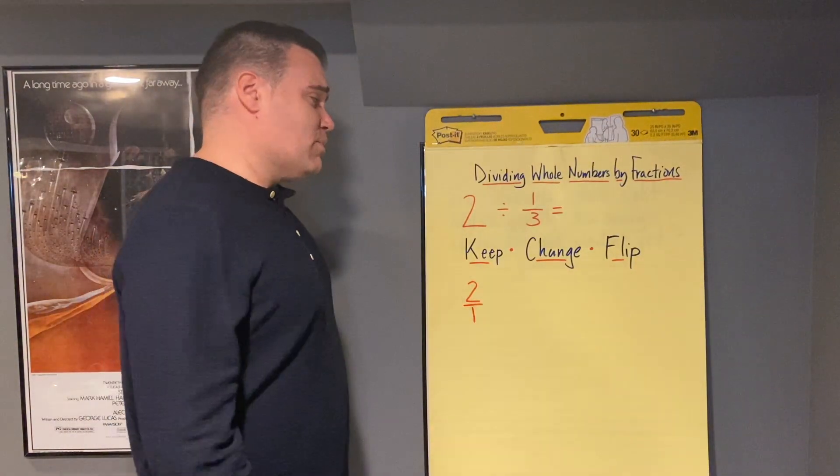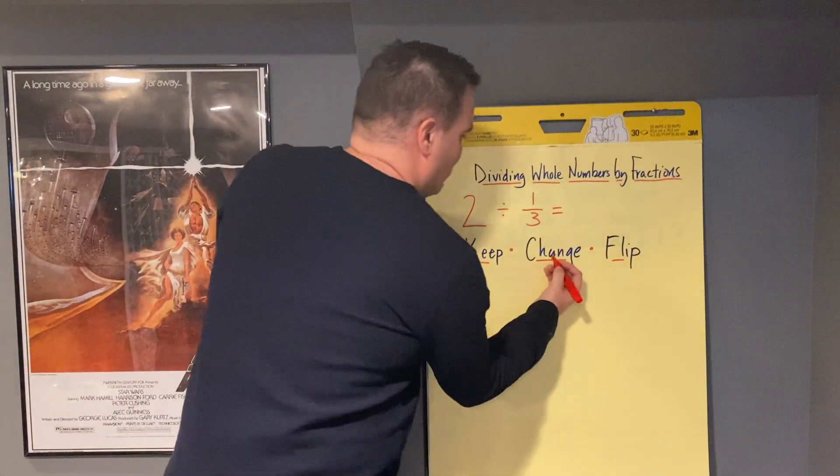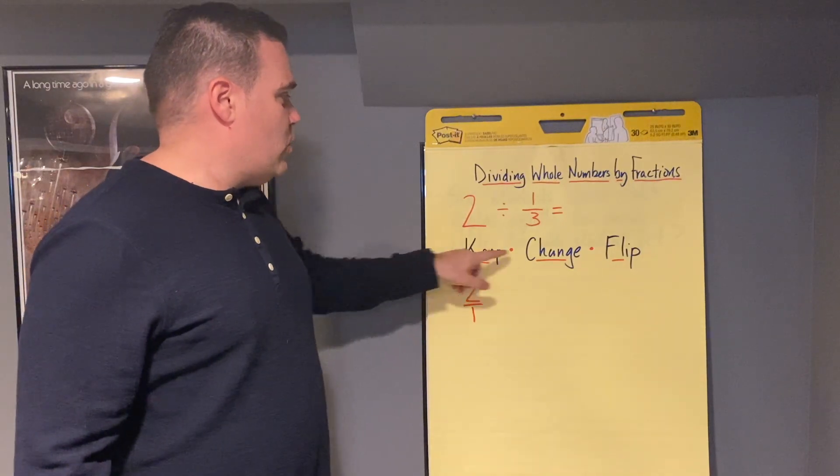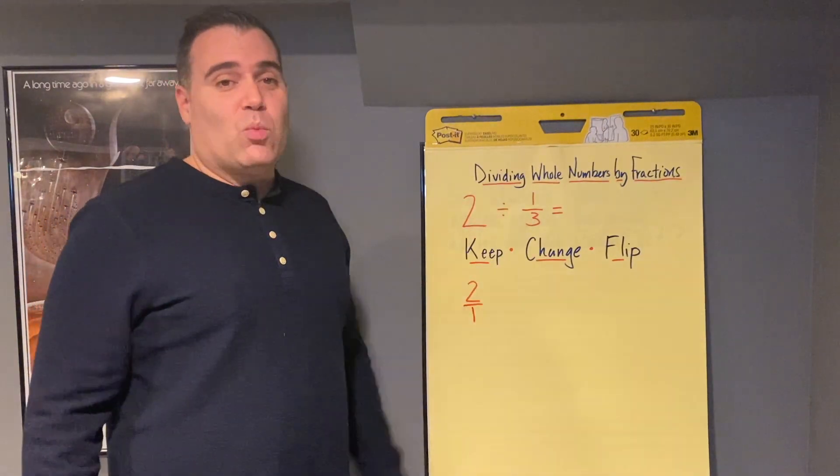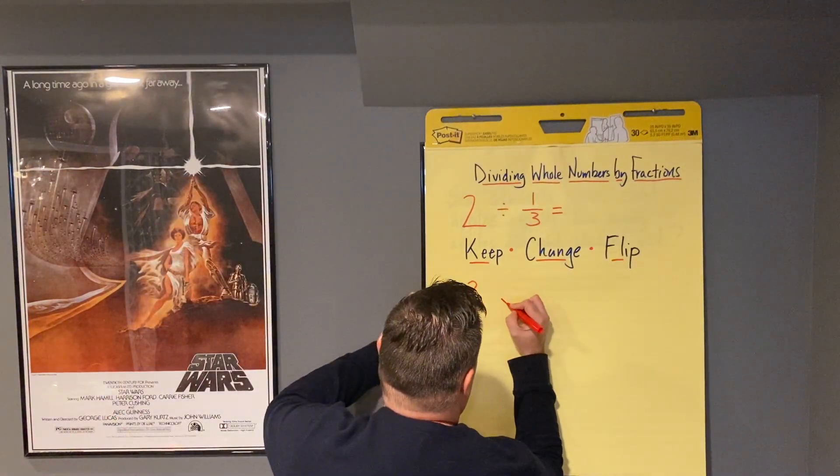The next thing we're going to do is we're going to take this division sign, and we're going to change it. So we keep the 2, we change the division sign, and what we're going to change it to is a multiplication sign.